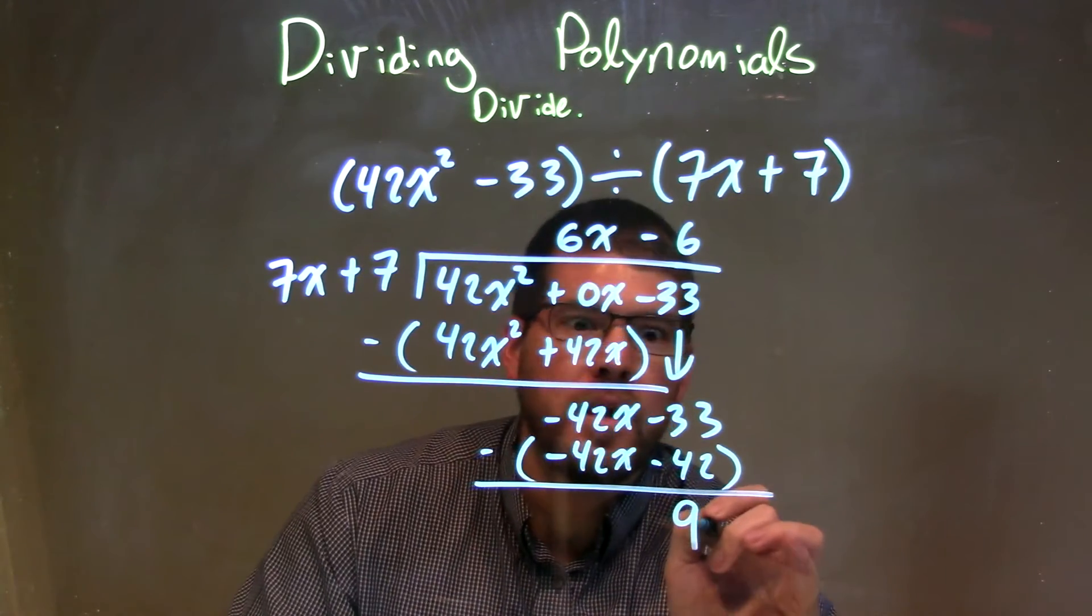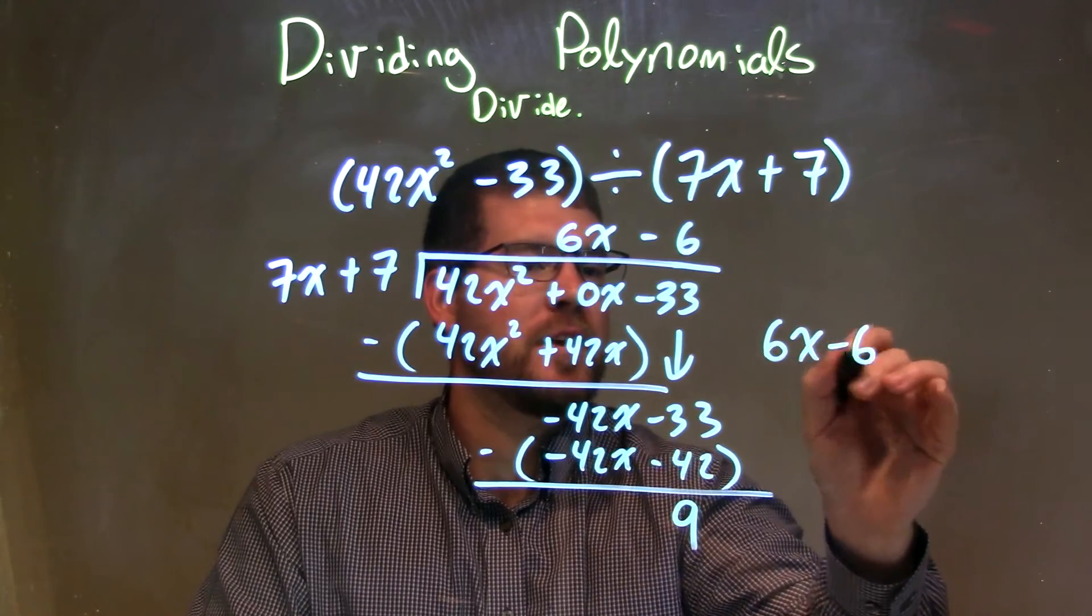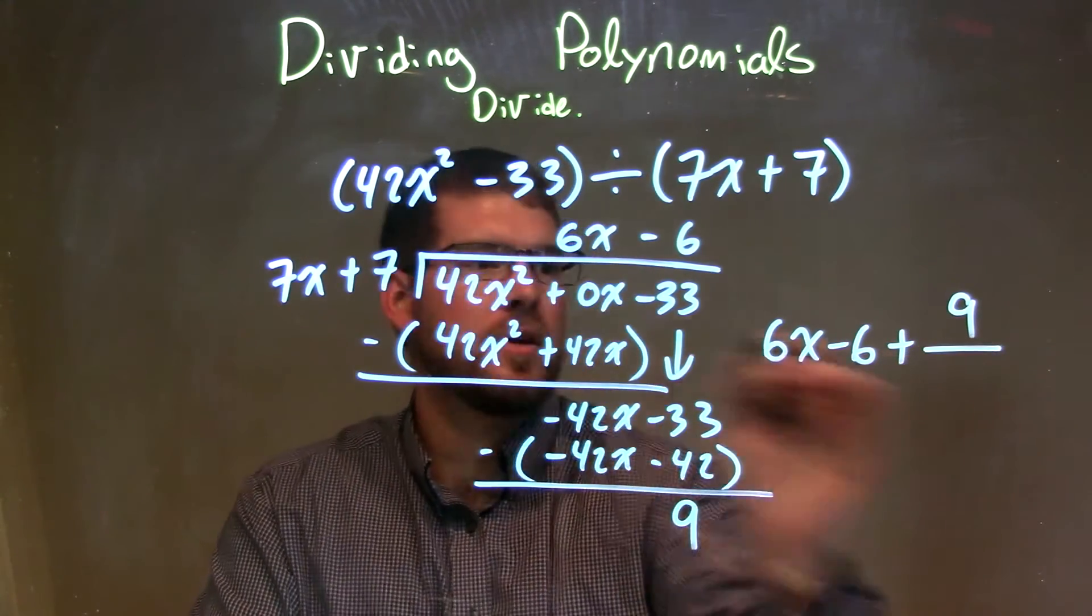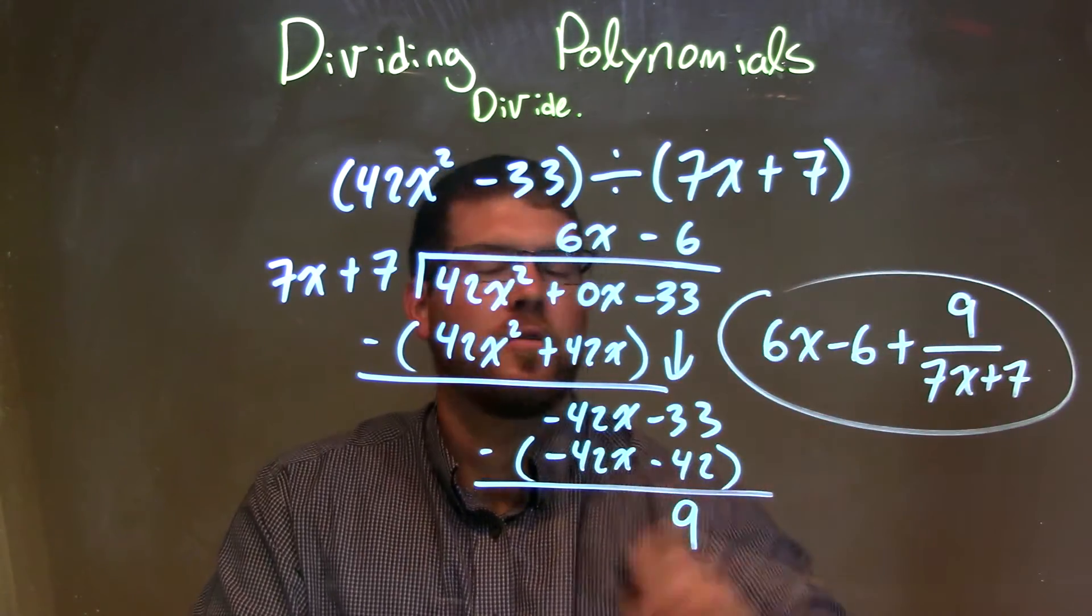So our remainder is 9. So we're pretty much done here. We write my 6x minus 6, 6x minus 6, plus my remainder, 9, over my divisor, which is 7x plus 7. And that is our final answer.